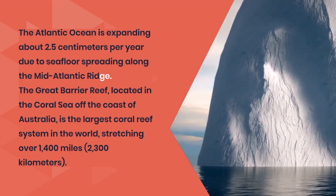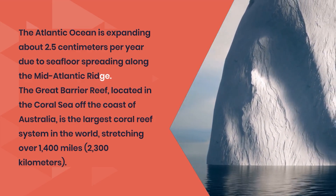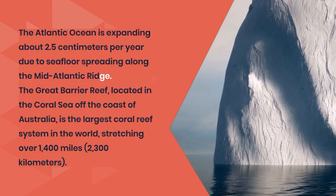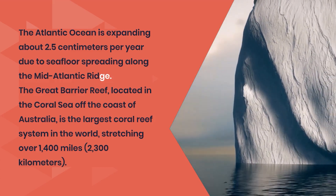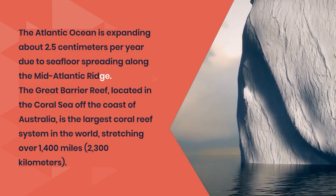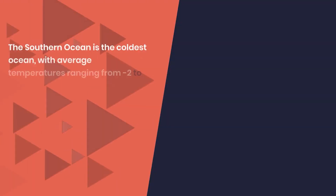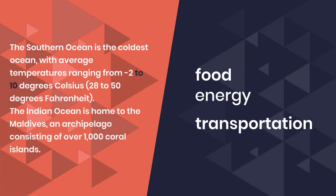The Great Barrier Reef, located in the Coral Sea off the coast of Australia, is the largest coral reef system in the world, stretching over 1,400 miles (2,300 kilometers). The Southern Ocean is the coldest ocean, with average temperatures ranging from minus 2 to 10 degrees Celsius (28 to 50 degrees Fahrenheit).